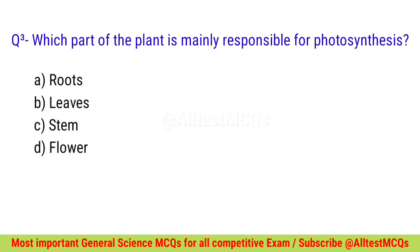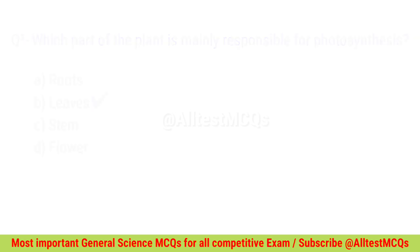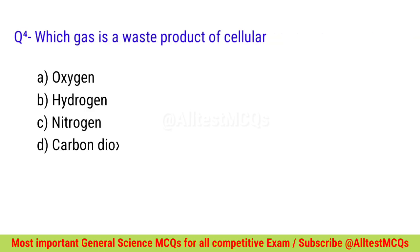Question number three: Which part of the plant is mainly responsible for photosynthesis? Correct option is B — Leaves. Question number four: Which gas is a waste product of cellular respiration? Correct option is D — Carbon dioxide.